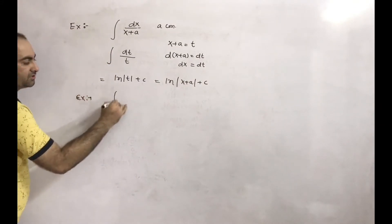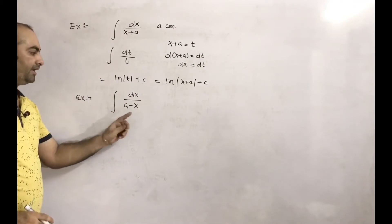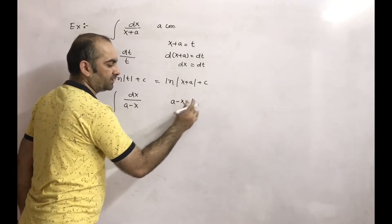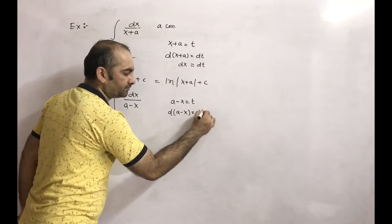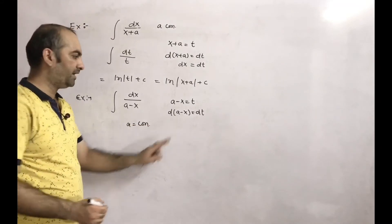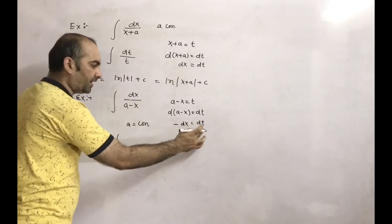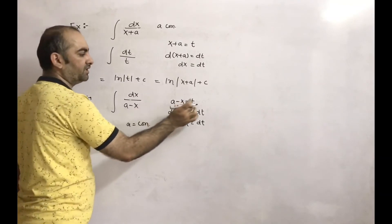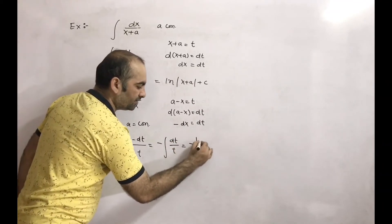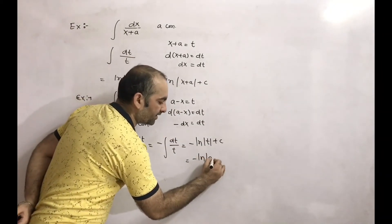Similarly, if you want to do integration of dx divided by (a-x): take a-x as t, then differentiate d(a-x) = dt. a differentiated is 0 since a is constant. Taking minus outside, x differentiated gives dx, so -dx = dt. This gives minus integration of dt/t, which comes to -ln|t| plus c. Substituting t = a-x, this gives -ln|a-x| plus c.